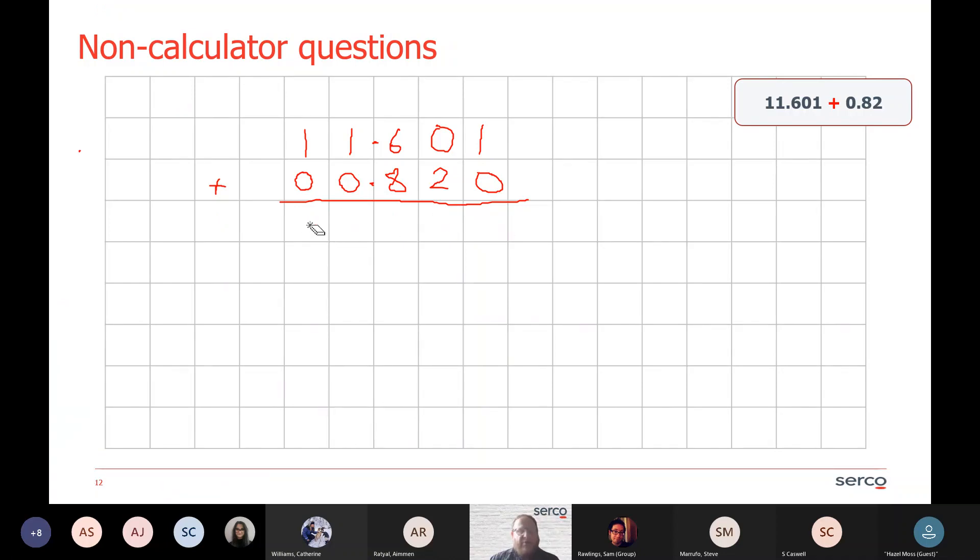We get a very similar story if we're doing subtraction. I'm going to use the same numbers: 11.601 takeaway 0.82. Once again, it's important to write them in columns alongside each other with the decimal point where it is.